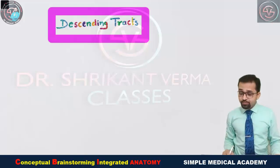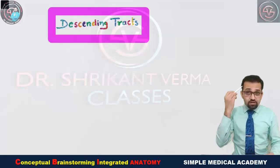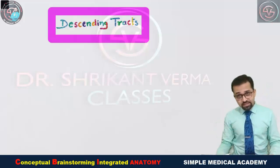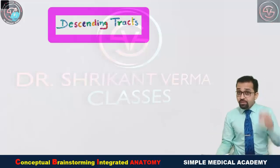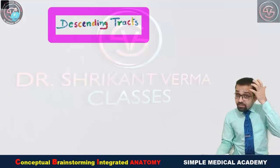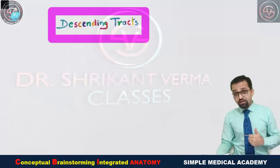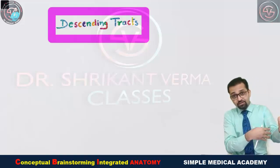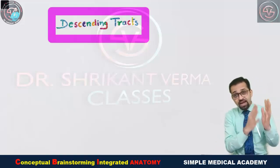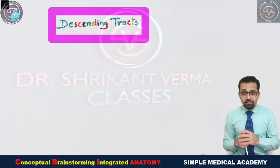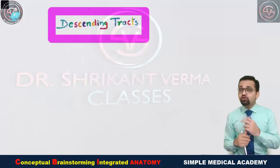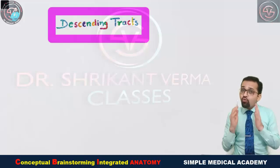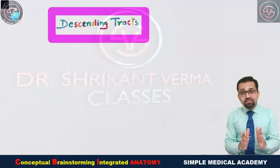After completing the ascending tracts, we now look at descending tracts. Descending tracts run from the brain down toward the spinal cord, then send signals to peripheral parts to produce movement — so they are also called motor tracts. These motor or descending tracts are of two types: pyramidal tract and extrapyramidal tract.